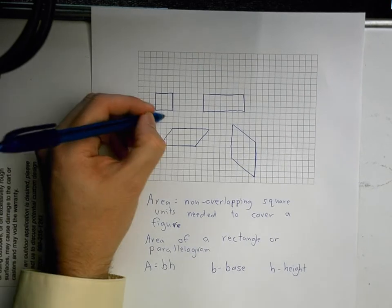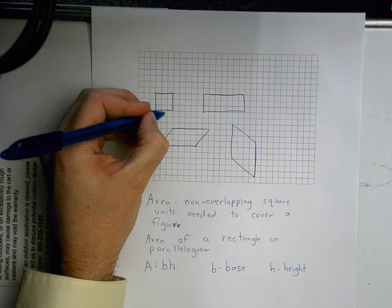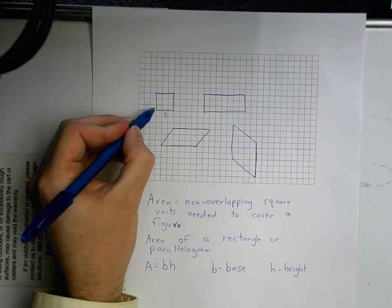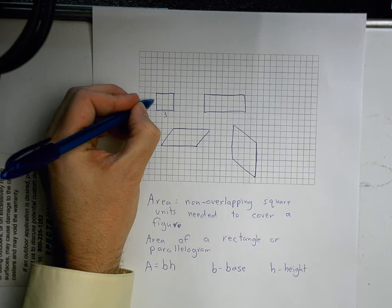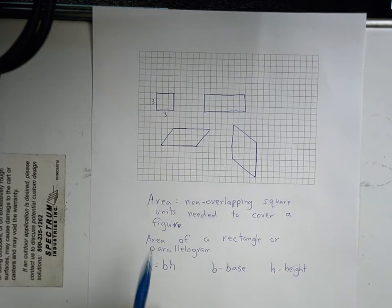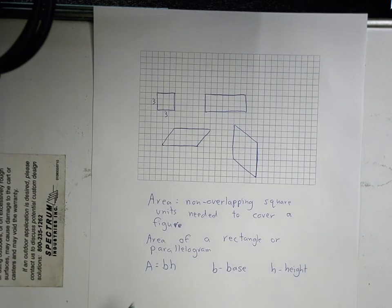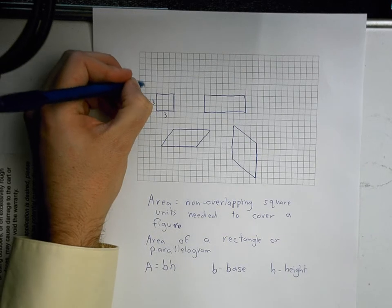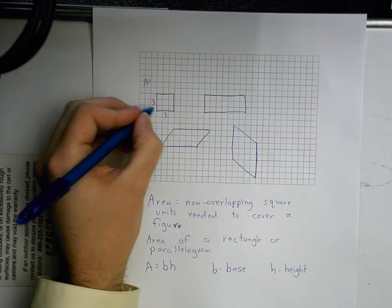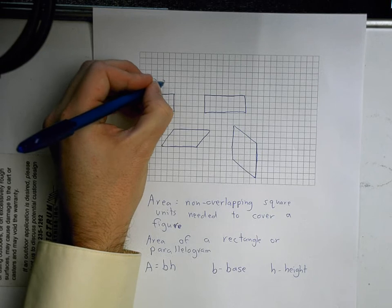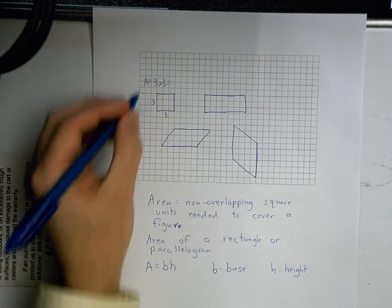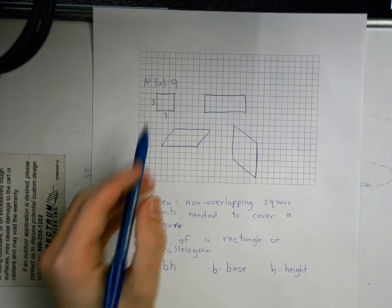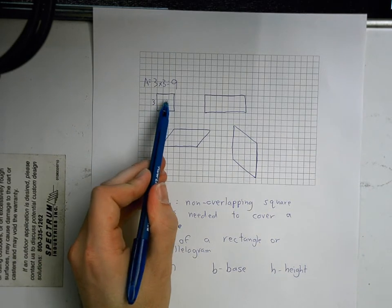So in this case, on this one, my base is three. See one, two, three and my height is one, two, three. So I'm going to plug that into my formula. So A equals three times three and that three times three is nine. So then I'm going to double check it by counting the square units inside.